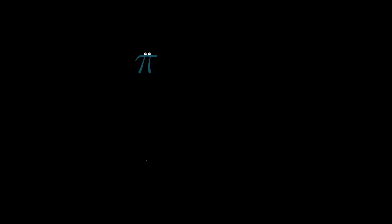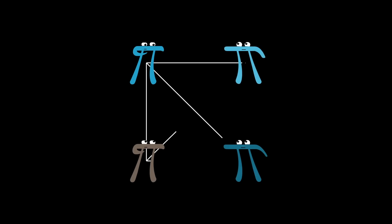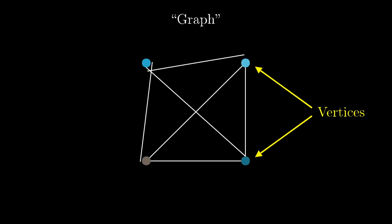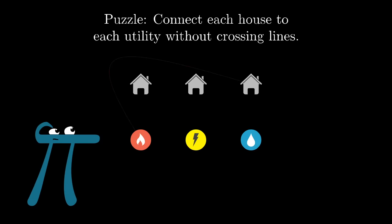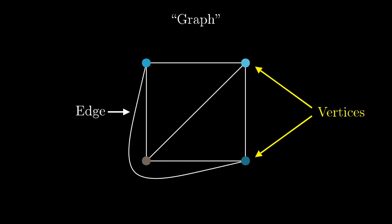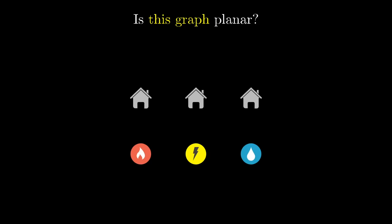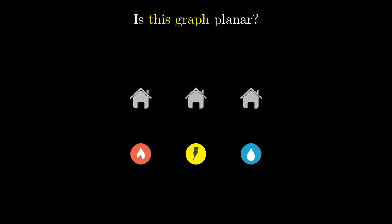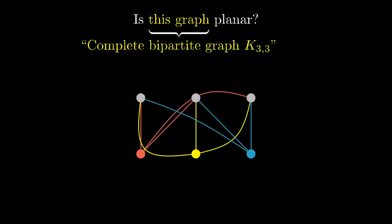For background, anytime that you have some objects with a notion of connection between those objects, it's called a graph, often represented abstractly with dots for your objects, which I'll call vertices, and lines for your connections, which I'll call edges. Now in most applications, the way you draw a graph doesn't matter. What matters is the connections. But in some peculiar cases, like this one, the thing that we care about is how it's drawn. And if you can draw a graph in the plane without crossing its edges, it's called a planar graph.